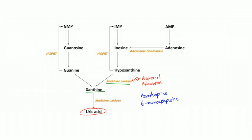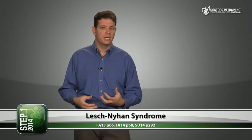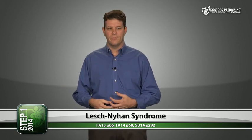Xanthine comes from either guanine or hypoxanthine. The enzyme HGPRT (hypoxanthine-guanine phosphoribosyl transferase) can recycle guanine back to GMP and recycle hypoxanthine back to IMP. It transfers a phosphate group and a ribosyl sugar onto those bases. If you're deficient in HGPRT, it causes Lesch-Nyhan syndrome.